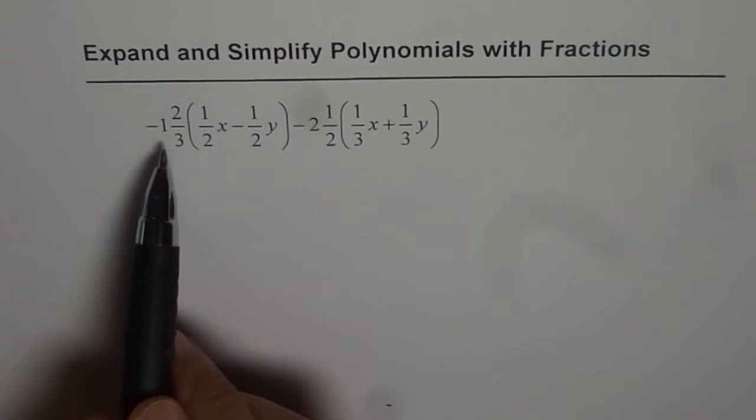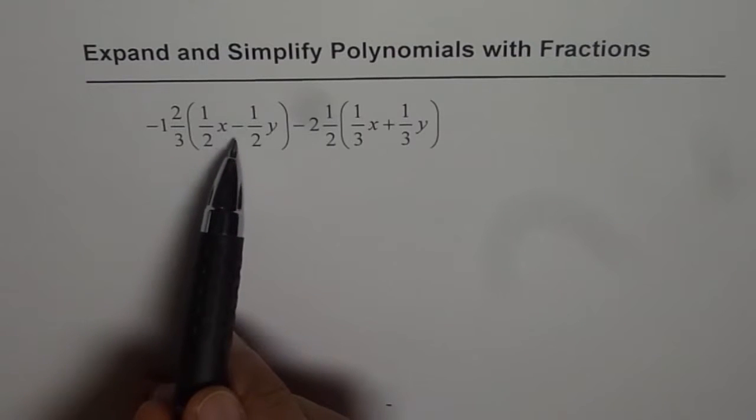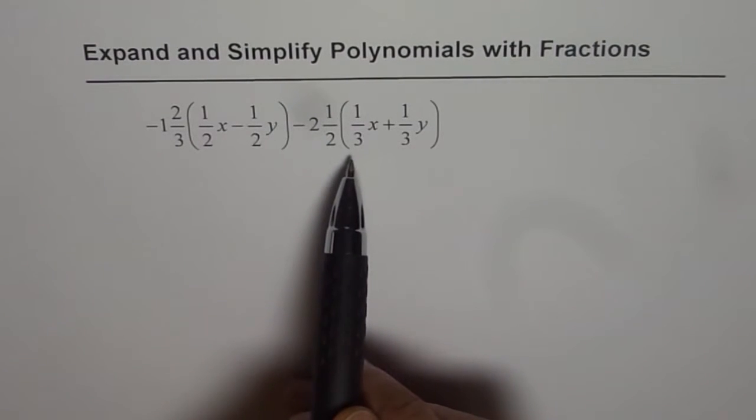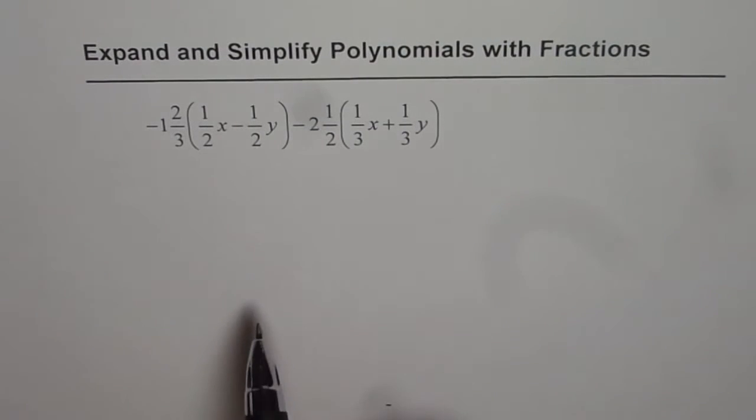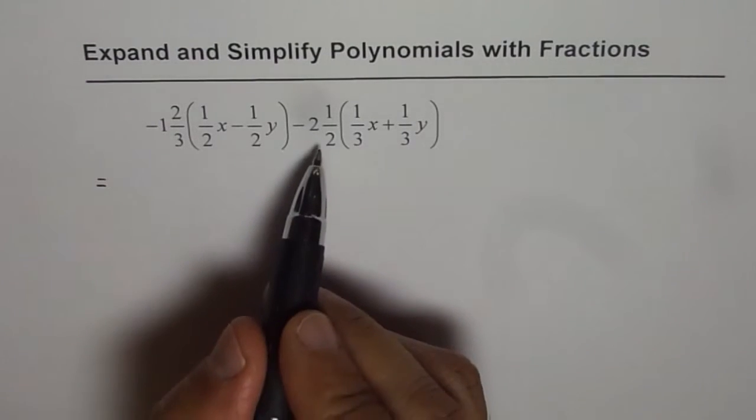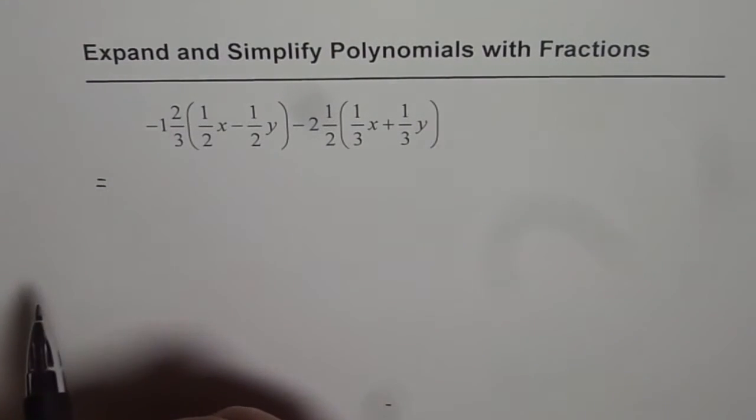Minus 1 2/3 times (1/2x minus 1/2y) take away 2 1/2 times (1/3x plus 1/3y). First step should be to write all these mixed numbers as improper fractions.